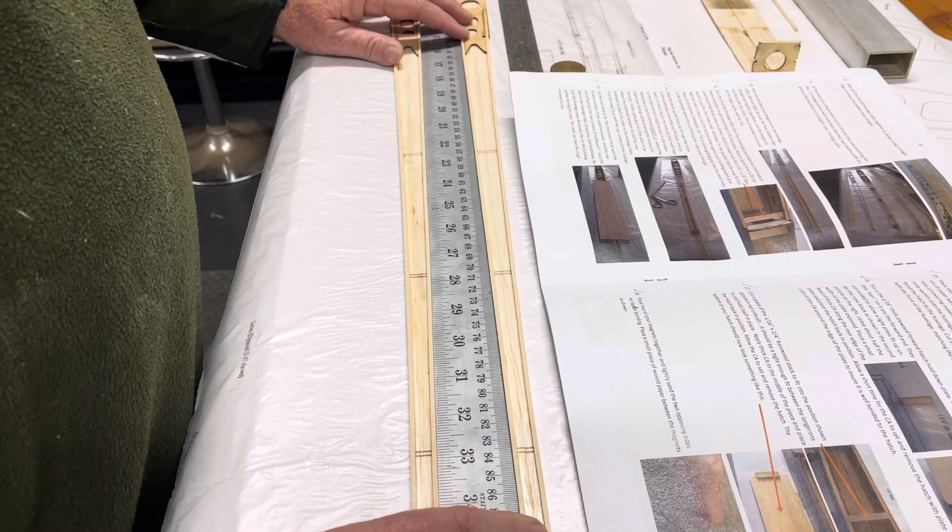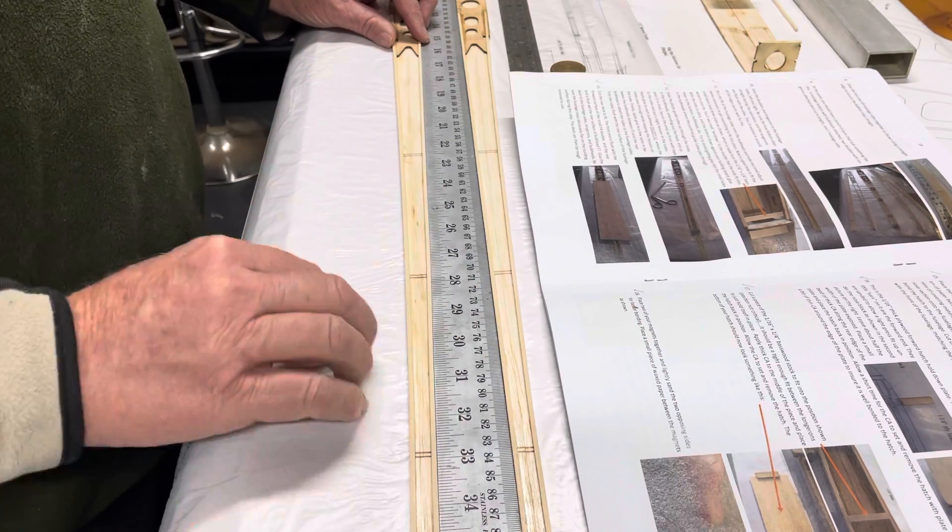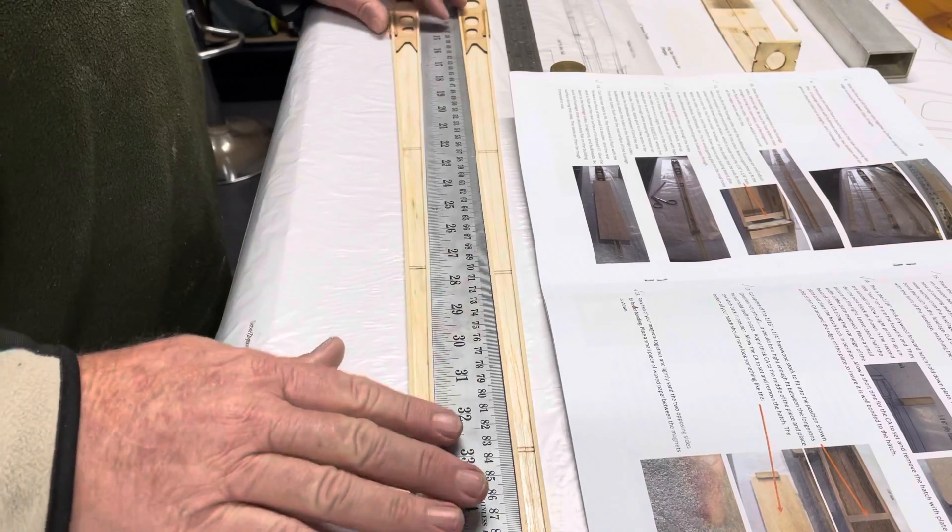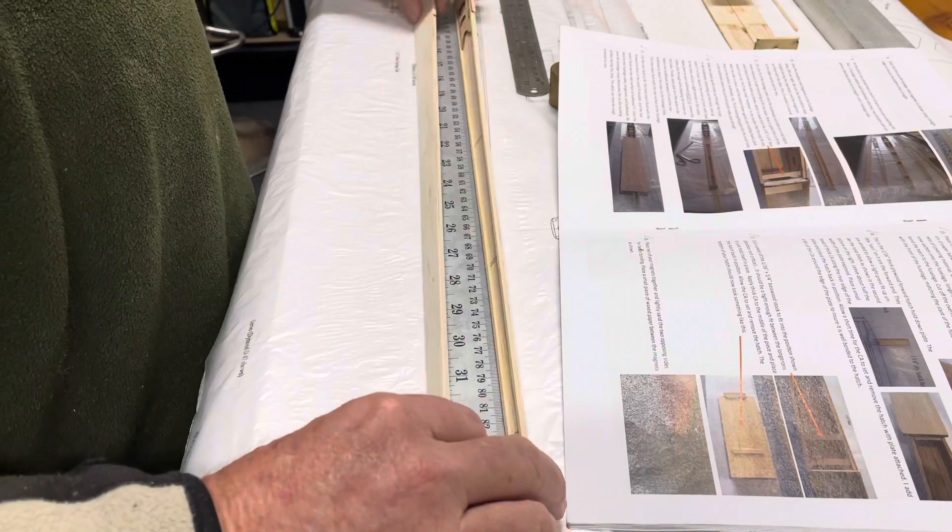For lack of a better word, up, and the other one was bent down. So you can imagine if I brought those together with the bulkheads, it would have put this massive twist into the fuselage.